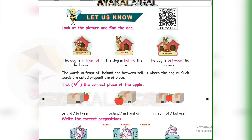Let us look at the picture and find the dog. The first three pictures show the dog. The dog is in front of the house. The dog is behind the house. The dog is between the house.